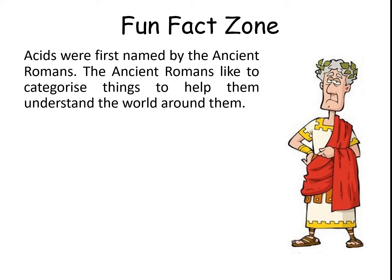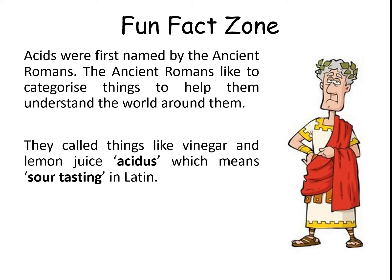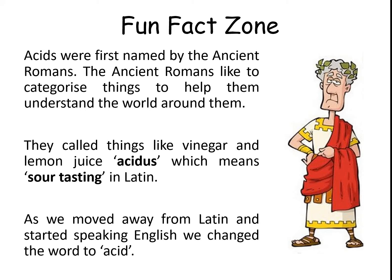I have a fun fact for you — I'll have one of these for every lesson. Today's fun fact is about the origin of the word 'acid'. Acids were first named by the ancient Romans, who liked to categorise things to help them understand the world around them — so they were early scientists. They called things like vinegar and lemon juice 'acidus', which means 'sour tasting' in Latin. You can see how this links into the activity we just did. As we moved away from Latin and started speaking English, we changed the word to 'acid', but it stems from 'acidus', meaning sour tasting.